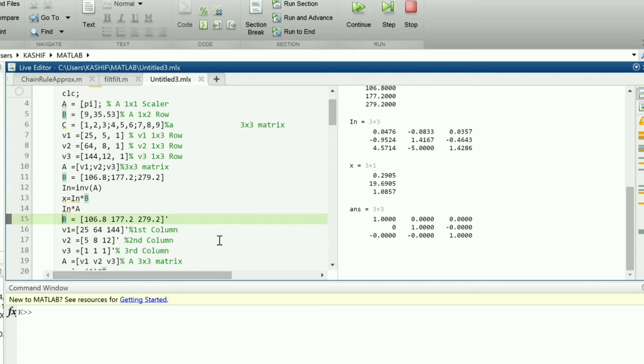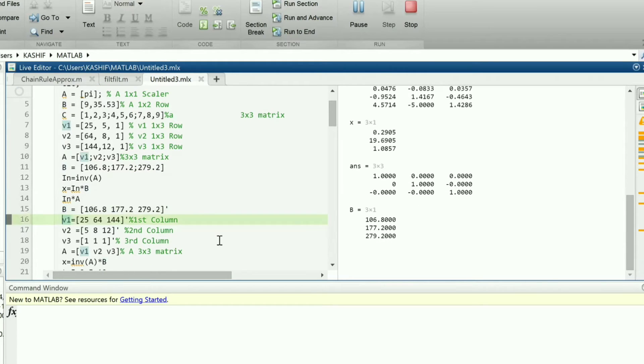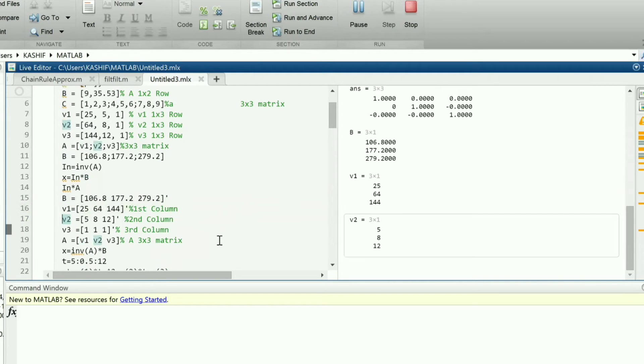We also write the 3 vectors v1, v2 and v3 as columns and form the matrix A and apply the same operations to find the solution equal to inverse A multiplied with vector b to get the unknown vector x.